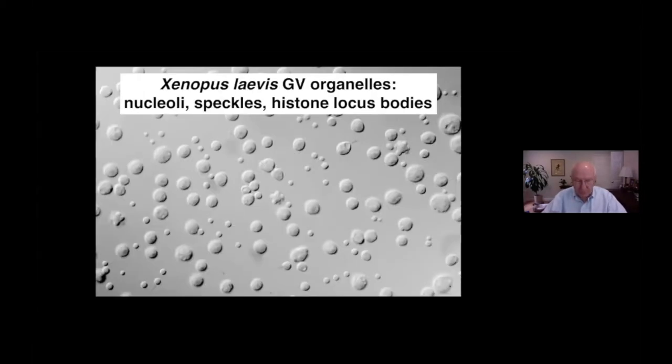In addition to the lampbrush chromosome, each oocyte nucleus contains hundreds to thousands of small bodies of different types. The largest of these have been called nucleoli since the 19th century, although the relationship to the nucleolus of ordinary somatic cells was not clear at all.